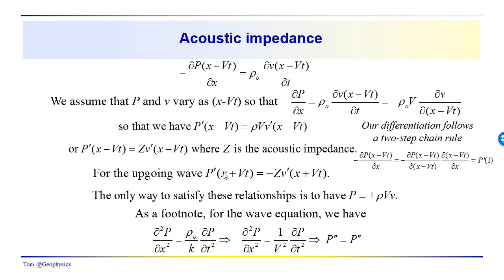For the up-going wave, we have p prime of (x plus Vt) equals minus Z · v prime of (x plus Vt). The only way to satisfy both relationships is if p equals plus or minus ρVv, which we'll use to determine the reflection and transmission coefficients. This product ρ times V is simply Z, the acoustic impedance. As a footnote, if we plug p(x minus Vt) into the wave equation and differentiate, we get the trivial result that p double prime equals p double prime.